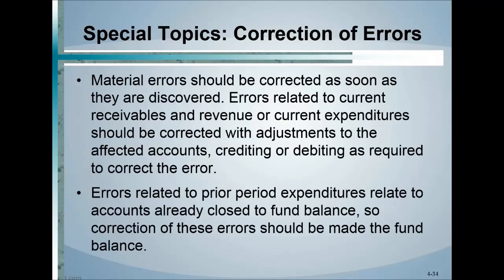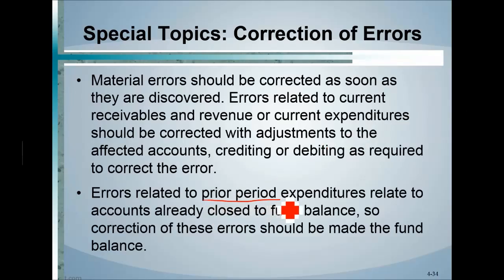Now shifting to special topics. If errors occur in current receivables, revenues, or expenditures, they should be corrected by adjusting the affected accounts as soon as possible. For prior period adjustments, the adjustment should be made to fund balance — which is the governmental equivalent of retained earnings in for-profit entities.